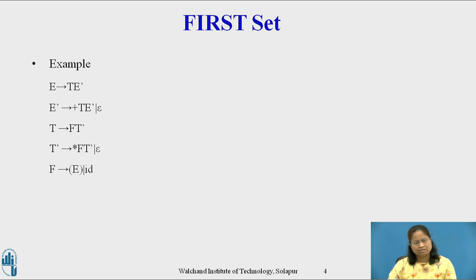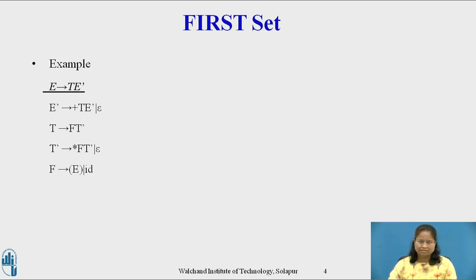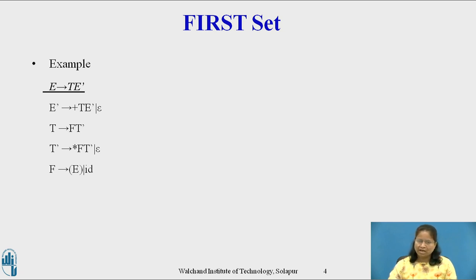Consider the grammar for arithmetic expressions. Consider the first production E derives T E'. Here the right side of the production contains non-terminals T and E'. Hence we apply Rule 3 to this production. So First(E) = First(T E'). We add to First(T E') all non-epsilon symbols of First(T), and also we add the non-epsilon symbols of First(E') if epsilon is in First(T).